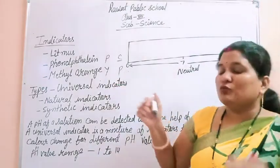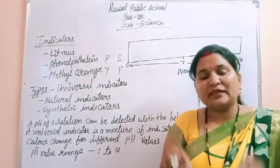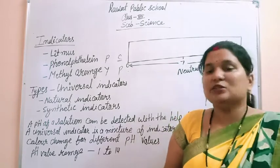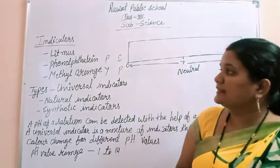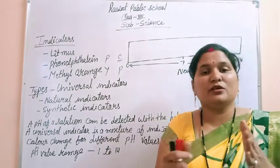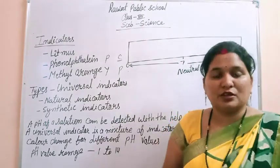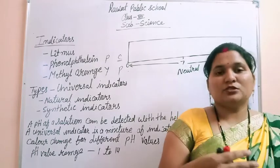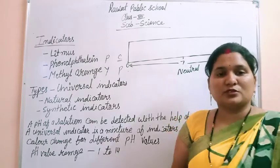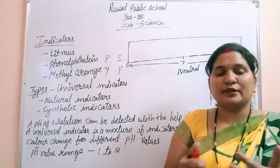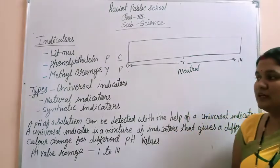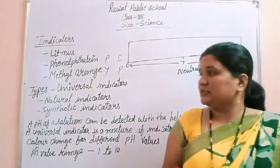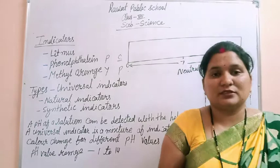So these three indicators — Litmus, Phenolphthalein, and Methyl Orange — are all substances that help us identify the nature of a solution. Now let's learn about the types of indicators.